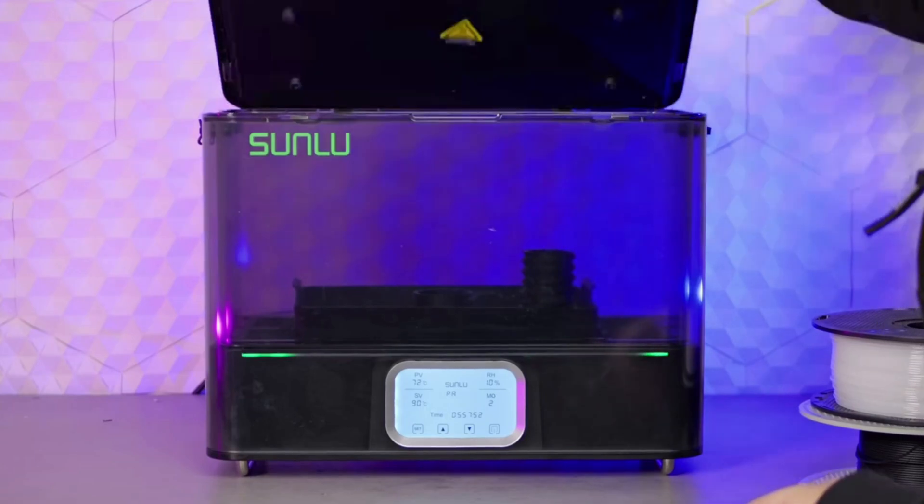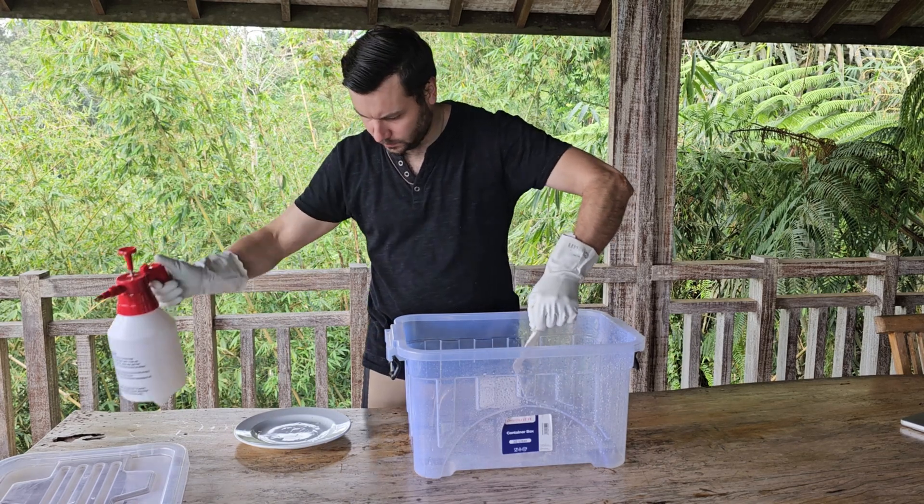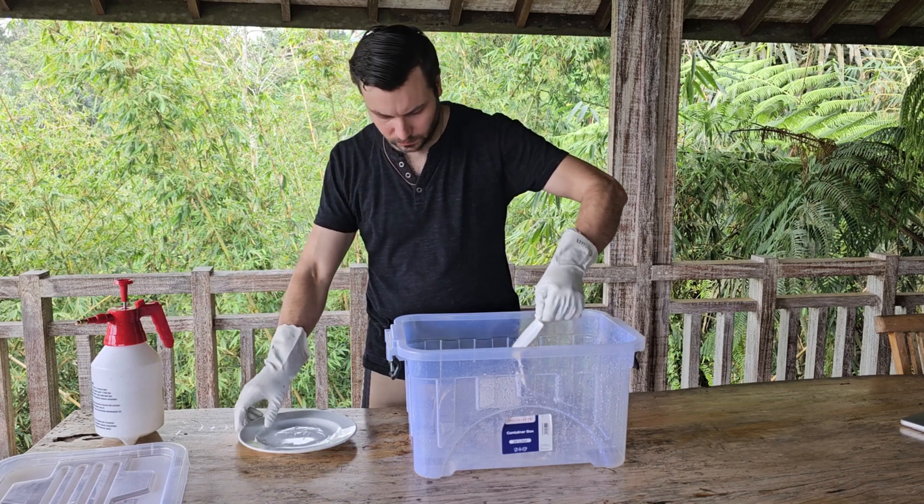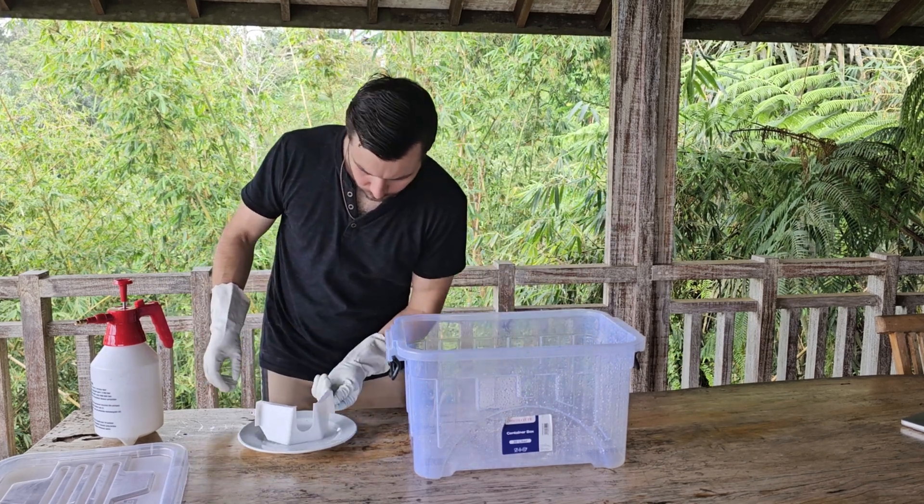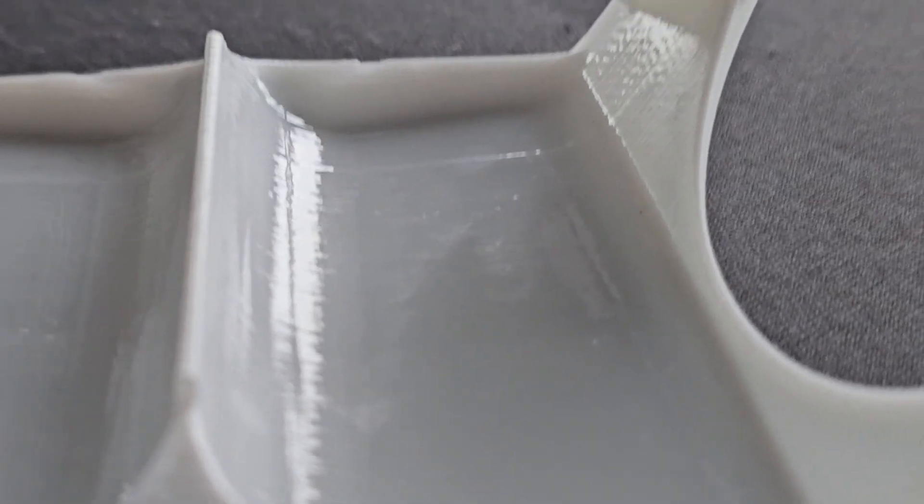24 hours later you can put it in a filament dryer at around 50-60 degrees Celsius to evaporate all the remaining acetone left in the part. The most critical thing that I've learnt with this is that you need your environment or room to be at least 30 degrees Celsius for the acetone to set evenly on the part after spraying.